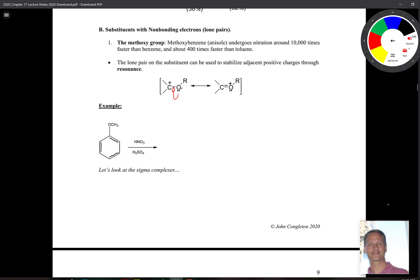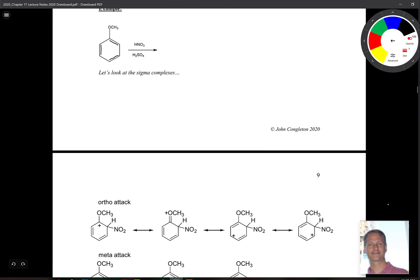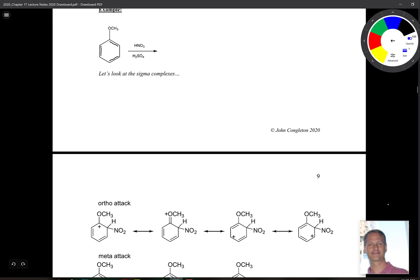So I want to look at this example with you guys here. Let's look at the nitration here of this compound. So before we write out what the products of this is going to be, the nitration of anisole here, let's take a look at the next page and look at what the sigma complexes are going to look like.